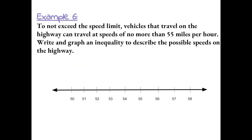Example 6. To not exceed the speed limit, vehicles that travel on the highway can travel at speeds of no more than 55 miles per hour. Write and graph an inequality to describe the possible speeds on the highway.